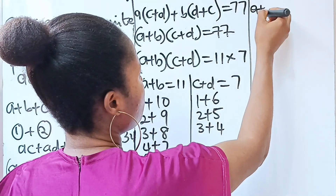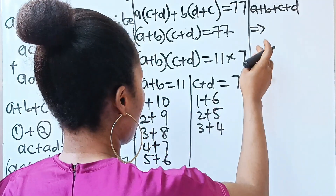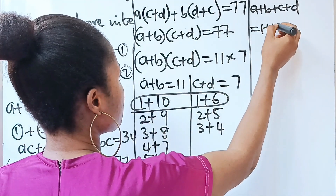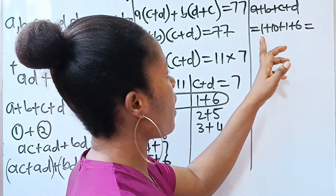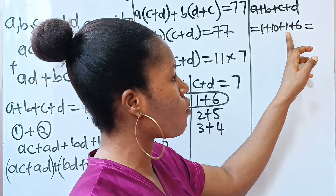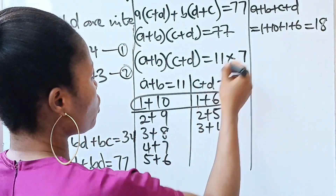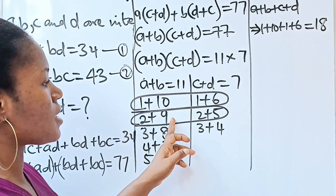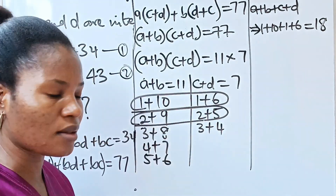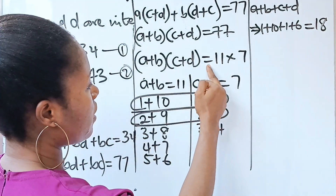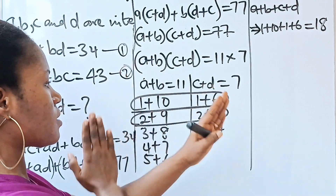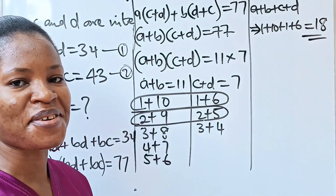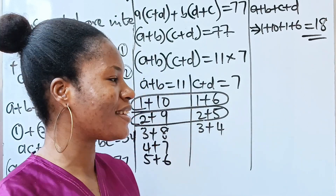We are asked for a + b + c + d. Taking the first possibility: 1 + 10 + 1 + 6 = 18. The second possibility: 2 + 9 + 2 + 5 — still 18. Every valid combination gives 18. Even if we flip to 7 × 11, we still get a + b + c + d = 18. So the answer is 18.